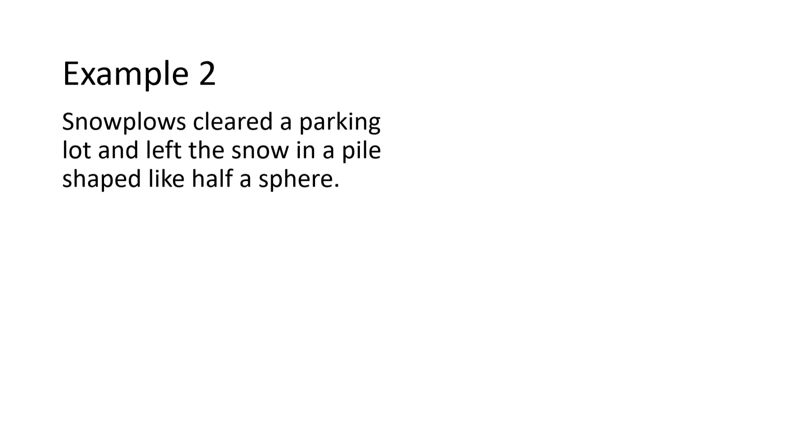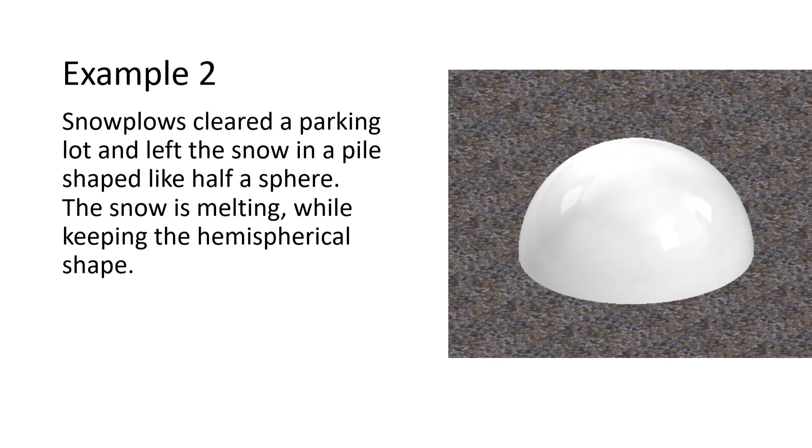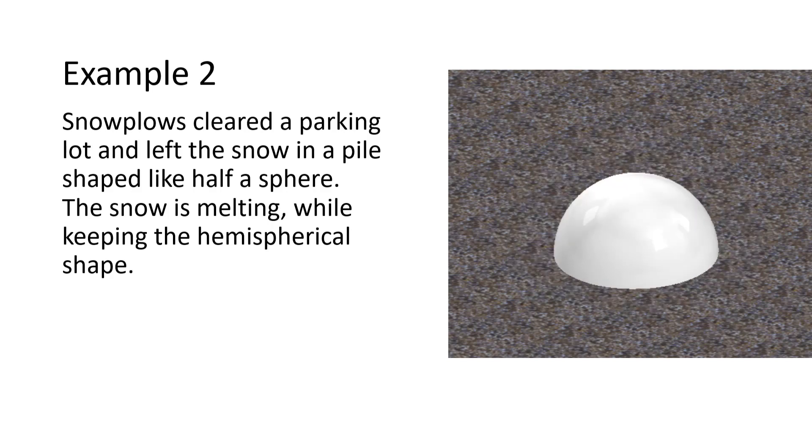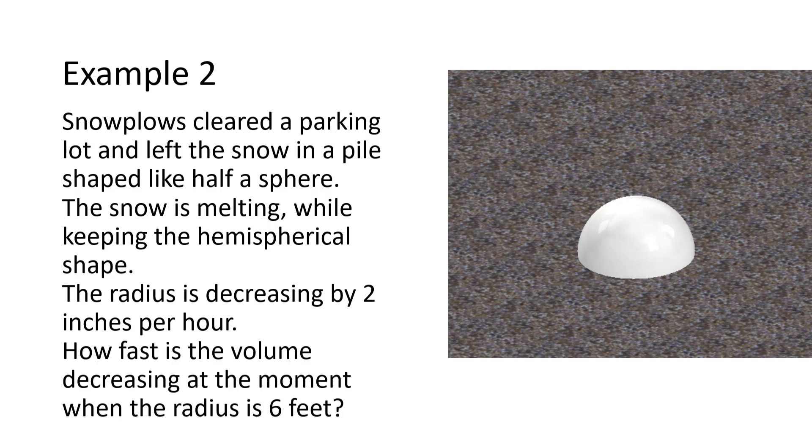Snow plows cleared a parking lot and left the snow in a pile shaped like half a sphere. The snow is melting while keeping the hemispherical shape. The radius is decreasing by 2 inches per hour. How fast is the volume decreasing at the moment when the radius is 6 feet?